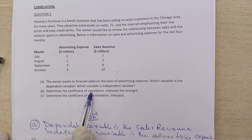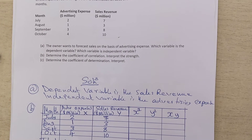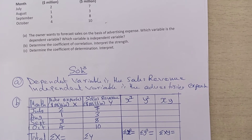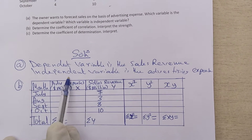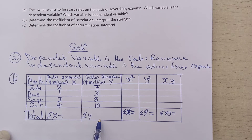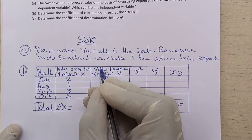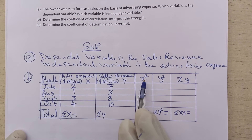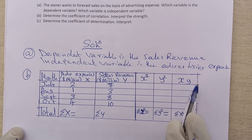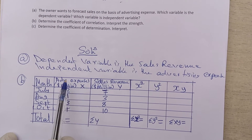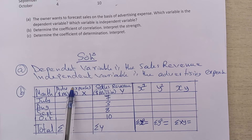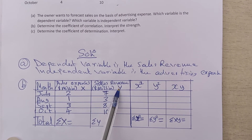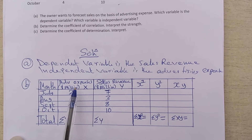Question B says: determine the coefficient of correlation. To determine the coefficient of correlation, you are going to redraw a table. You rewrite the advertising expense and the sales revenue, then create three new columns: X squared, Y squared, and XY. X stands for advertising expense, which is the independent variable, and Y stands for sales revenue, which is the dependent variable — Y is dependent on X.